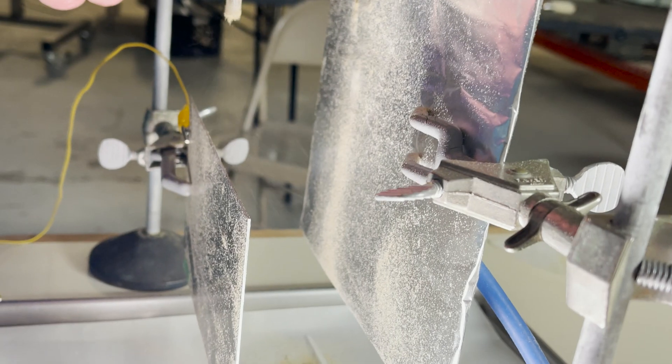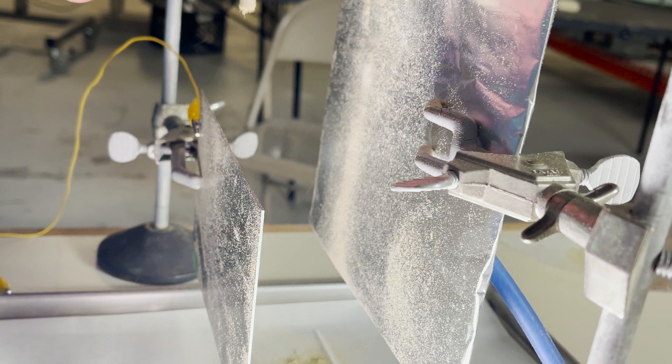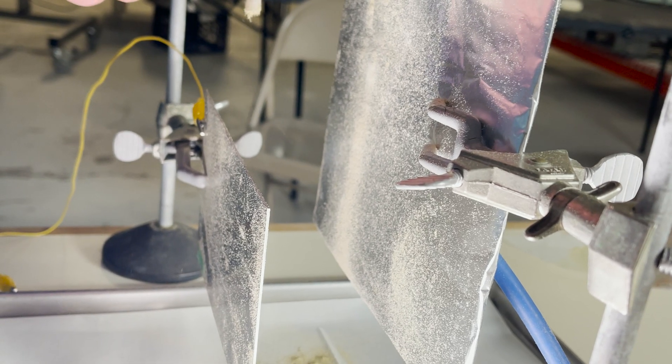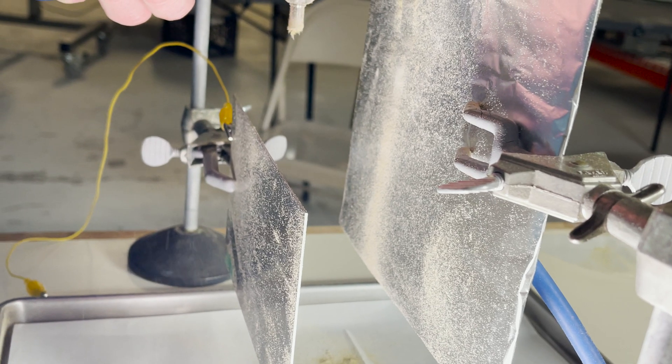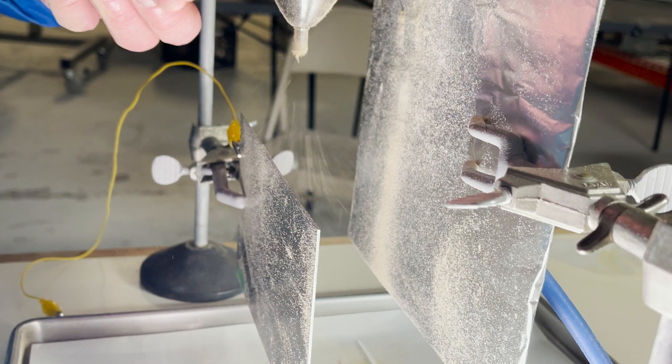This is where electrostatic separation comes into play. In electrostatic separation, particles are subjected to an electrostatic field which charges them, and they are then attracted to plates with the opposite charge to separate them.